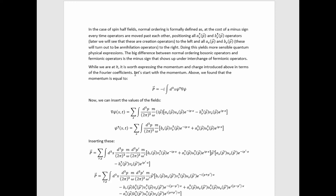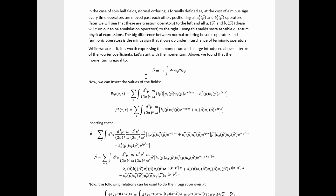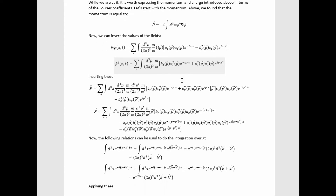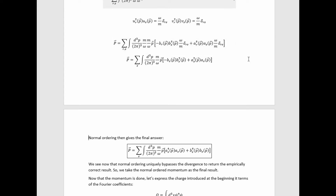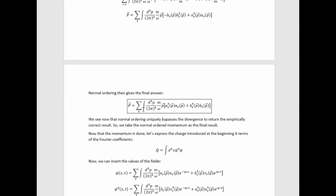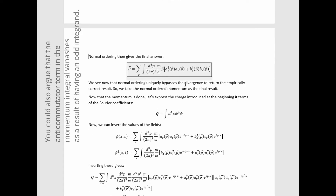It is also worth expressing the momentum and charge in terms of Fourier coefficients. For the momentum, inserting the field values, multiplying out, performing the x-integration with the same integral relations, doing the p-prime integration with delta functions, applying identities to rewrite and vanish two terms, using formulas to eliminate annoying factors, and doing the sum over r ultimately relabels an index as s. Normal ordering then gives the final answer, uniquely bypassing the divergence to return the empirically correct result. The normal-ordered momentum is taken as the final result.